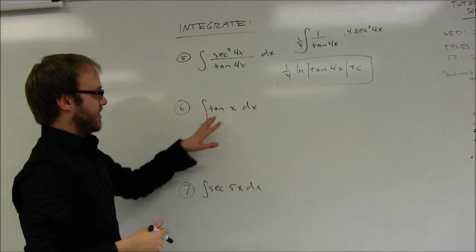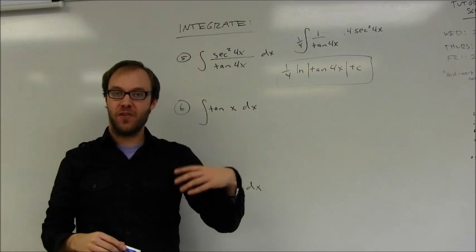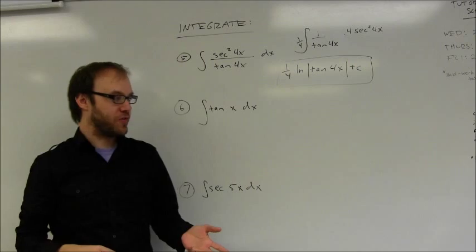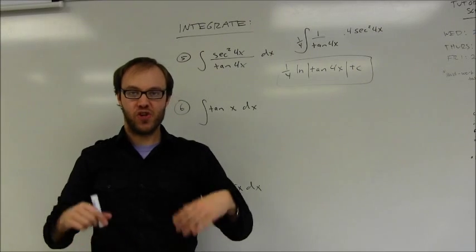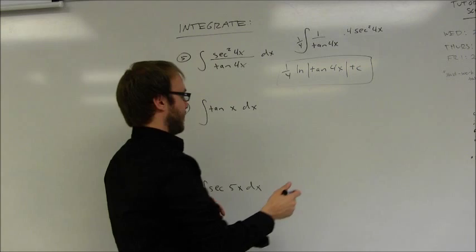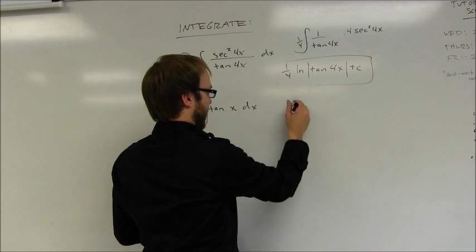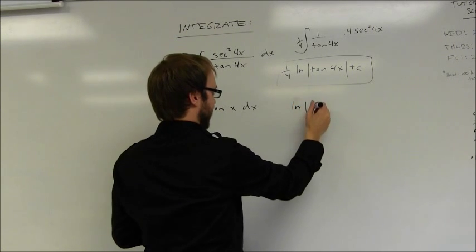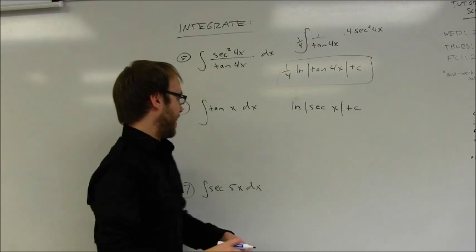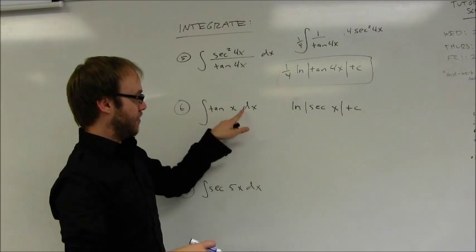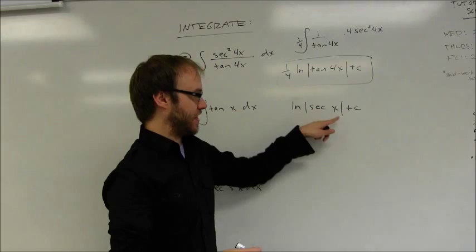The next integral is the integral of tangent of x dx. This is one you can either memorize or convert via a trig substitution into a reciprocal function. The short rule to memorize: the integral of tangent of x dx is the natural log of the absolute value of secant of x, plus C. If I had a tangent of 5x, I would need the derivative of the inside function on the outside, balanced with one-fifth, giving one-fifth times the natural log of the absolute value of secant of 5x, plus C.